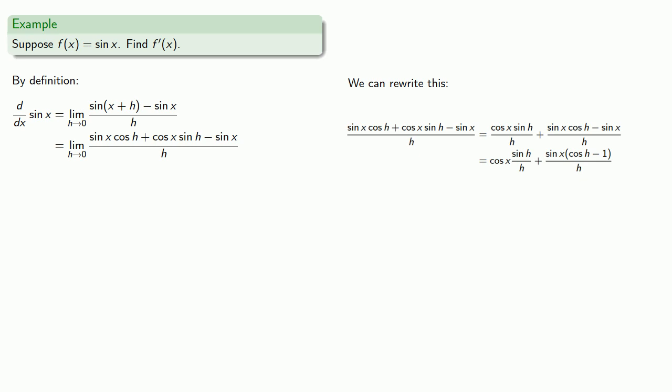And we don't know what to do with cosine h, but there is a connection between sine and cosine. And we can get there if we multiply numerator and denominator by cosine h plus one. Because if we do that, we get...